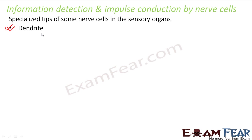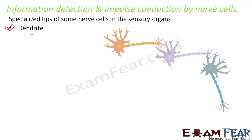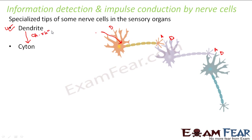The dendrites bring the information inside the cell body of the neuron. Once information enters, a chemical reaction starts. You can see here how neurons are connected: the dendrites of one neuron connect to the axon endings leading to the dendrites of the next neuron. The information comes into the cell body, and as it does, a chemical reaction starts which produces an electrical impulse.